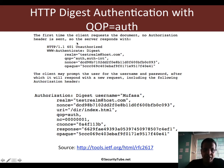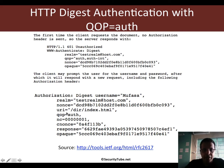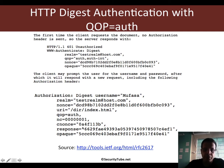After this, the client looks at QOP, and in most cases says it only supports auth. So it picks up the nonce, the opaque, and all of that, and goes ahead and creates a digest response. The realm, nonce, and opaque remain the same. QOP is what it supports, which is auth. URI is actually the resource path which we were trying to access. NC is simply a counter, and cnonce is the client nonce. Then it computes a response.